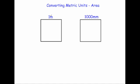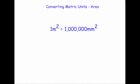Now let's look at going between meters and millimeters. One meter is 1,000 millimeters, so one times one is one meter squared, and 1,000 times 1,000 is one million millimeters squared. So one meter squared is one million millimeters squared. Because you're multiplying each of the two lengths by 1,000, when you multiply those together it's a million times larger.